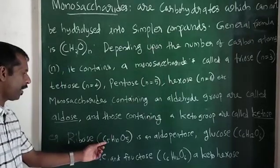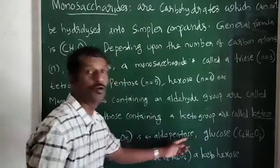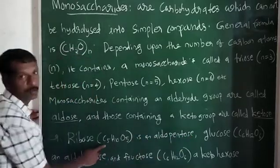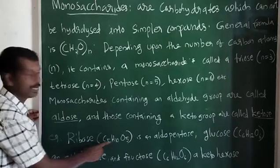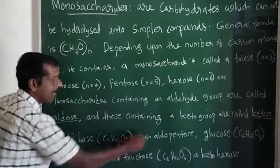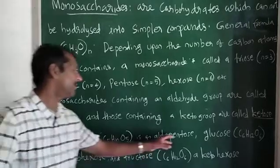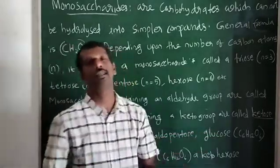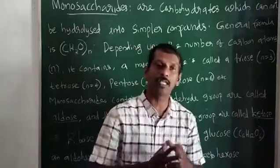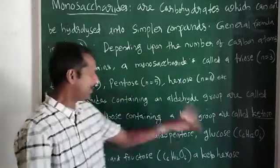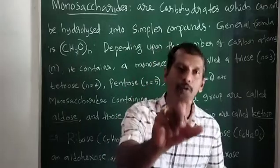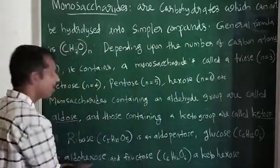Ribose has the formula C₅H₁₀O₅ and is an aldopentose. Pentose means there are 5 carbon atoms, and aldo means it contains an aldehyde group. Glucose has the formula C₆H₁₂O₆ — 6 carbon atoms makes it a hexose — and since glucose contains an aldehyde group, it is known as aldohexose.